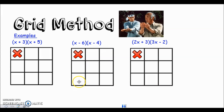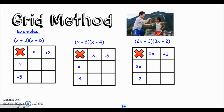The last example covers questions where you have two x or some number of x's in the bracket. You take the two x as one term, so two x goes in the first box and plus three in the second box. Three x goes in the first box of the column and minus two goes in the bottom. Make sure you take the signs with the numbers and treat two x and three x each as one term.